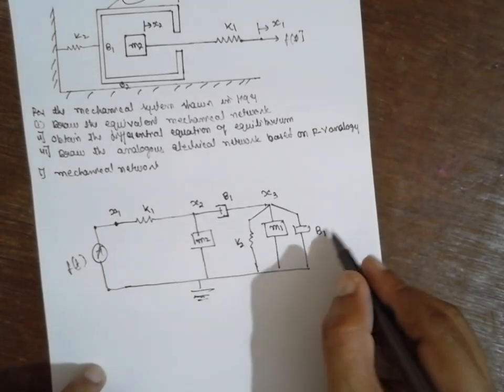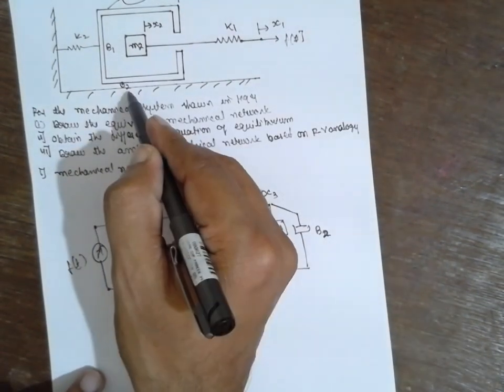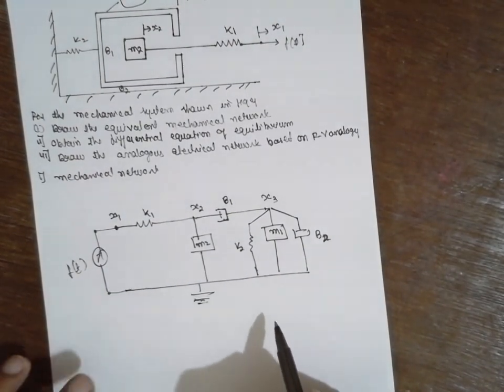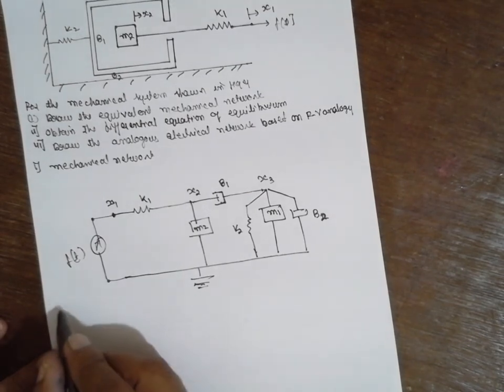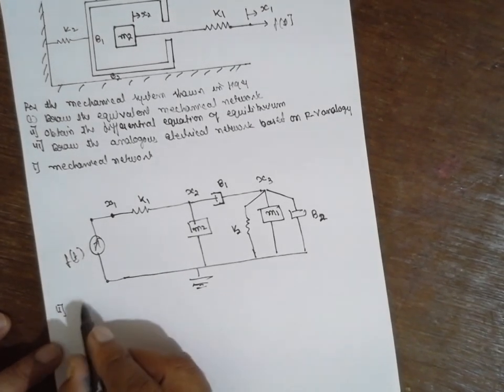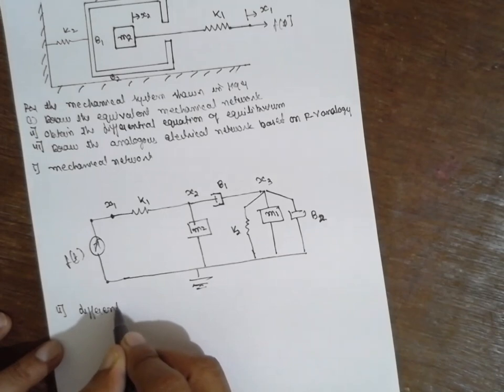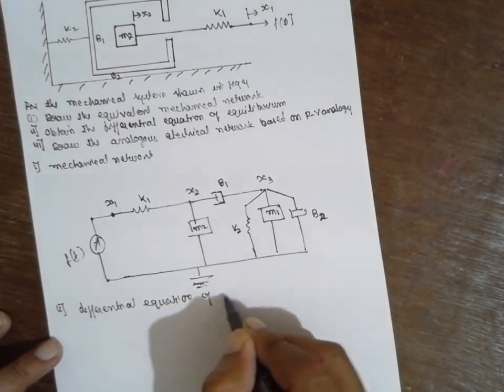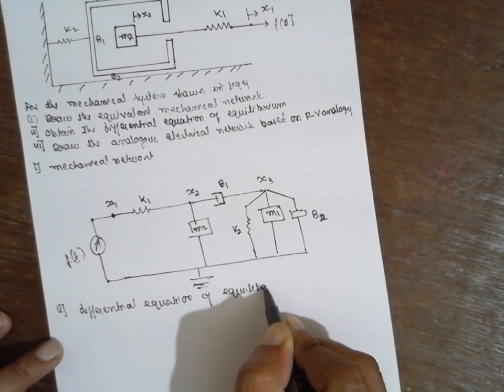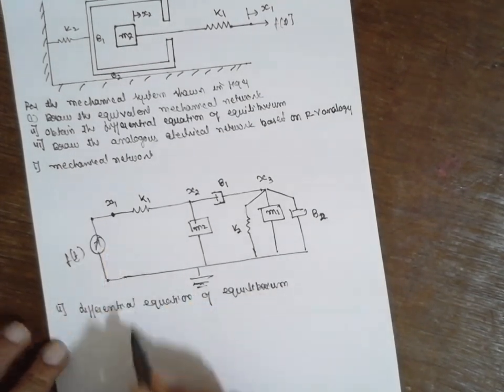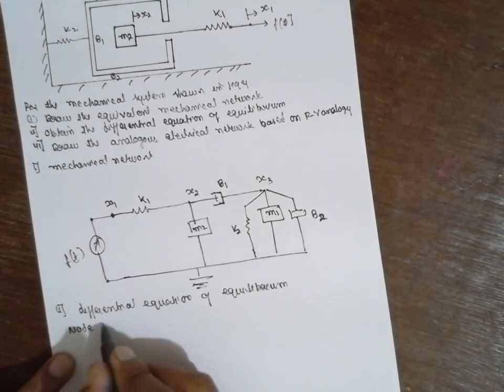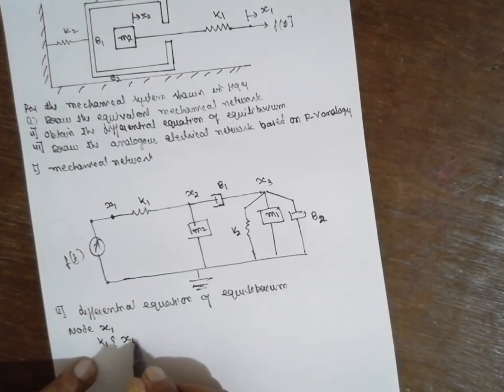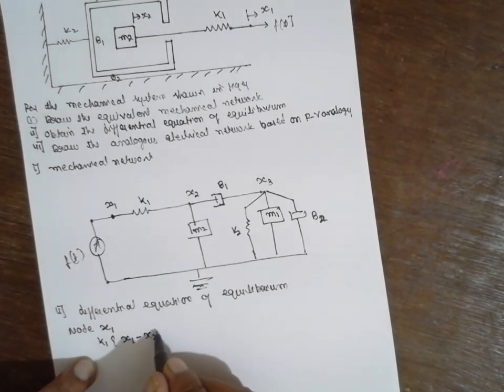It is B2. Now everything is clear here. Now draw the differential equation. First node 1, node x1: K1 times x1 minus x2 is equal to F of t.